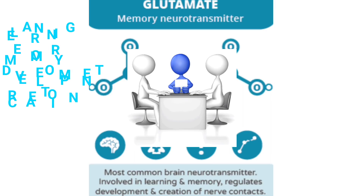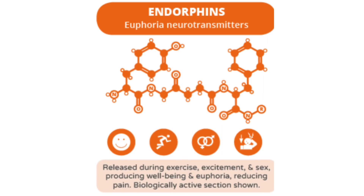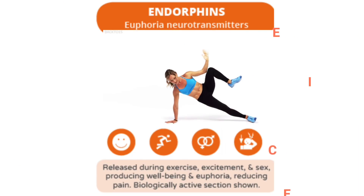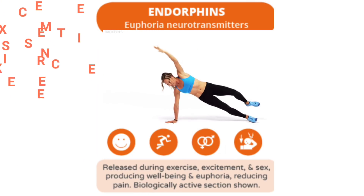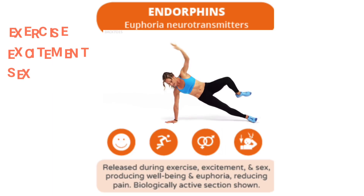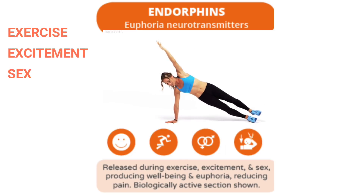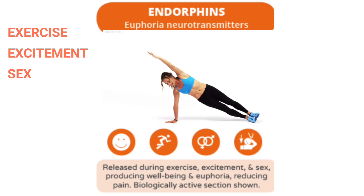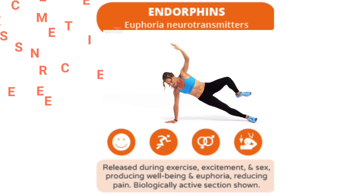Glutamate is the memory neurotransmitter — the most common brain neurotransmitter — involved in learning and memory and regulating the development and creation of nerve contacts. Endorphin is the euphoria neurotransmitter, released during exercise, excitement, and sex, producing well-being and euphoria and reducing pain. This covers the biologically active section on synapse and the various types of neurotransmitters.